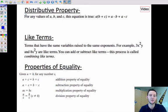But the first one that you have on your note sheet is the distributive property. And what the distributive property says is that for any values of a, b, and c, this equation is true. So you've got this equation, a times b plus c, in parentheses.